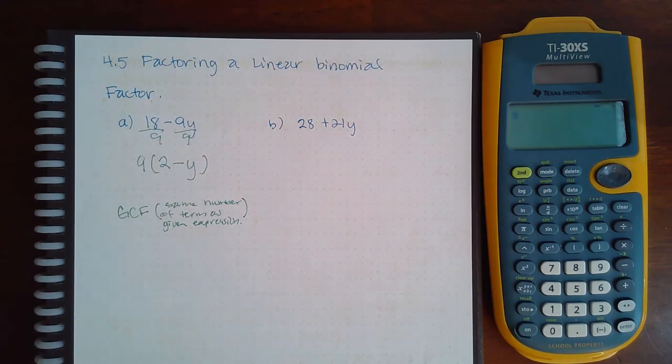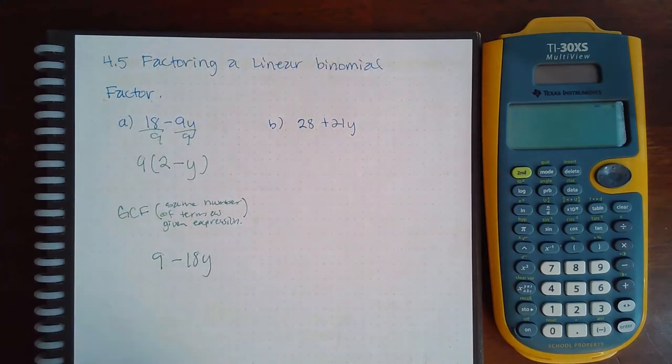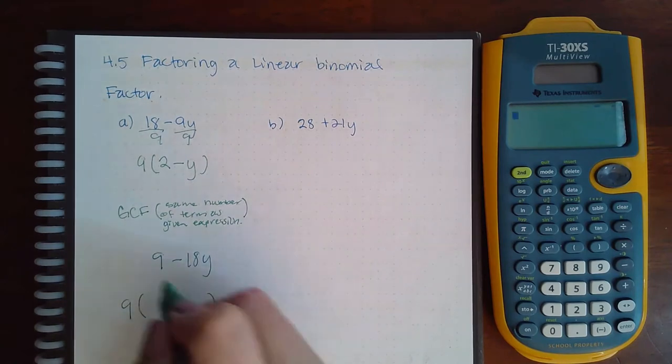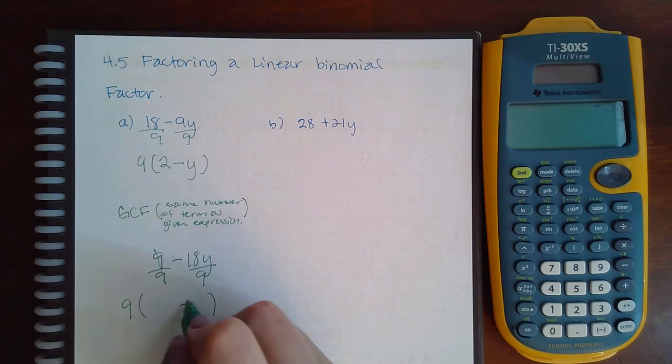That's important because sometimes, let's say for instance, it was 9 minus 18y, right? And we factored out the 9 and I've seen people do this and say that cancels and all I have is negative 2y.